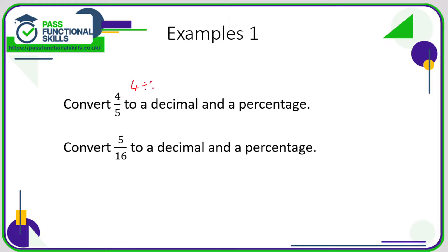4 divided by 5 is 0.8. To convert to a percentage, it's top divided by bottom times by 100, or to go from the decimal to the percentage, just multiply this by 100. 0.8 multiplied by 100 is 80 percent.